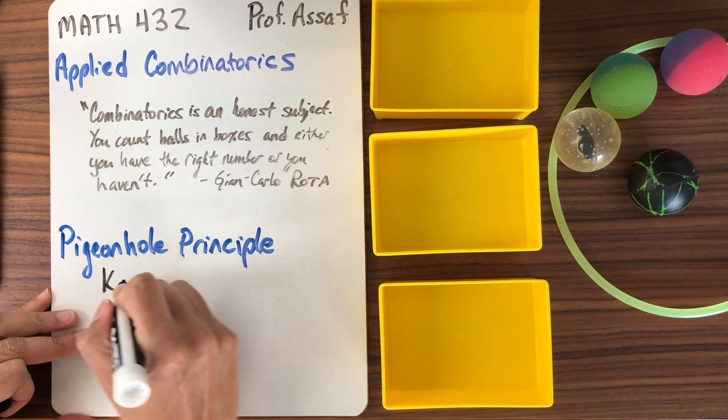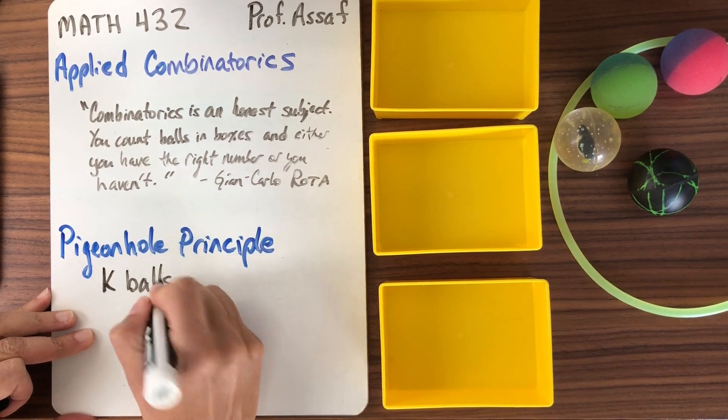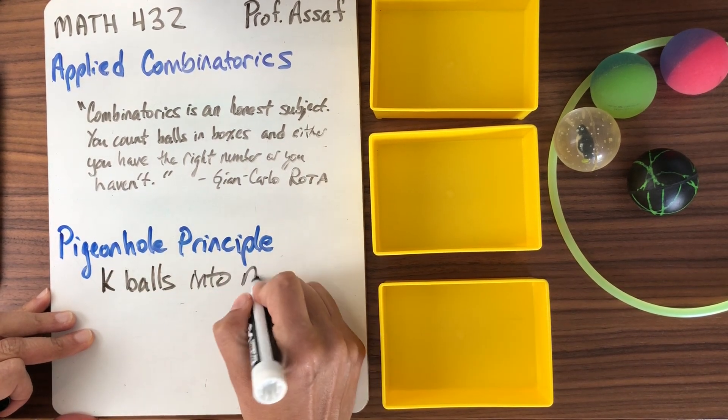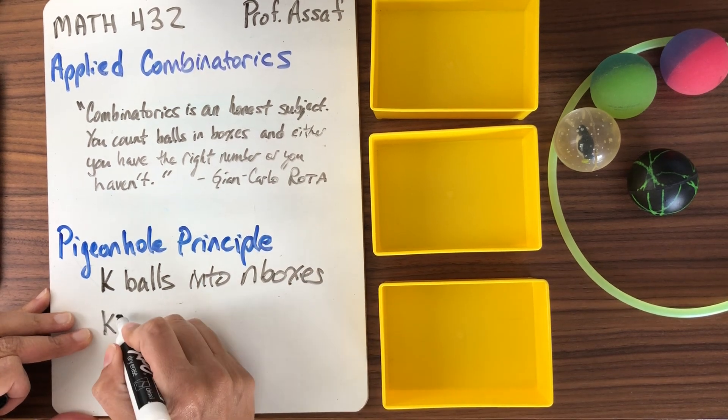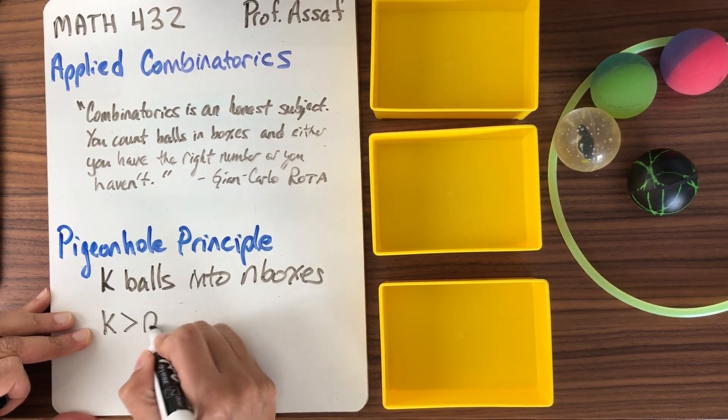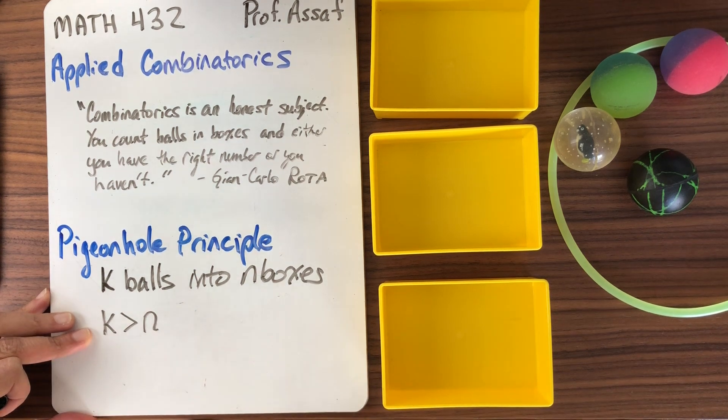If we're going to place k balls into n boxes, and if we know that the number of balls is bigger than the number of boxes, what can we conclude?